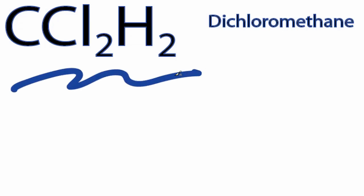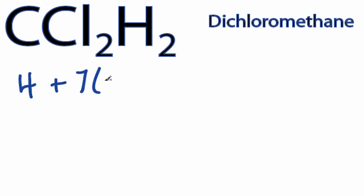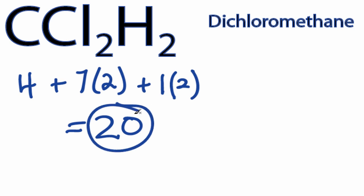For the CCl2H2 Lewis structure, on the periodic table, carbon has four valence electrons. Chlorine has seven. We have two chlorines plus hydrogen, which has one valence electron, two hydrogens, for a total of 20 valence electrons for the CCl2H2 Lewis structure.